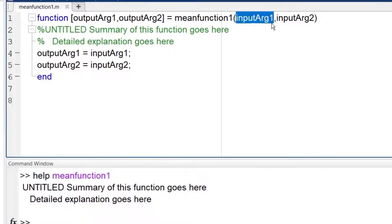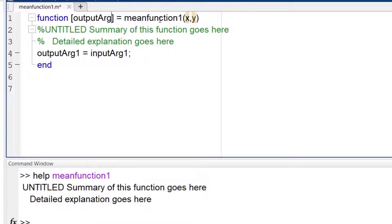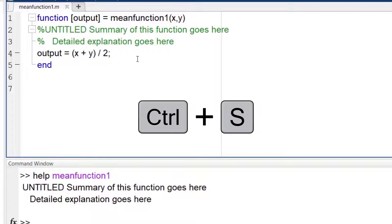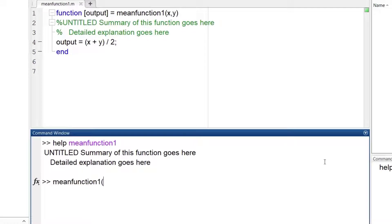Now imagine my function receives two numbers named x and y and calculates their mean value. I change my input arguments to x and y, and the output will be (x + y)/2. I change the output arguments and save it. Now in the command window I type meanfunction(3, 7) and yes, the mean value is 5. I could store the output in a variable.